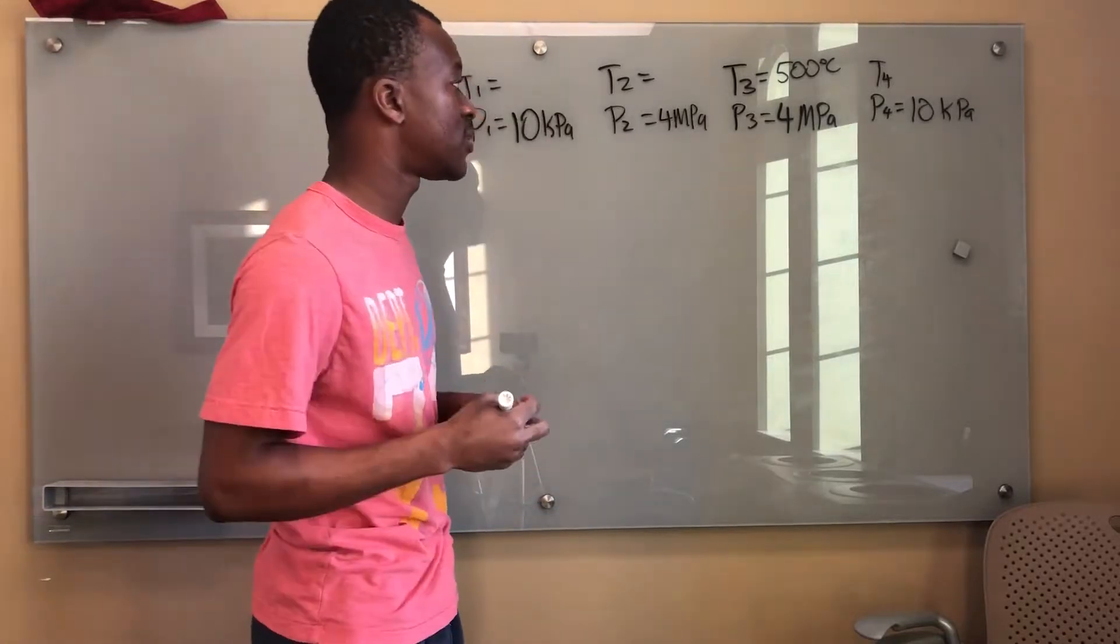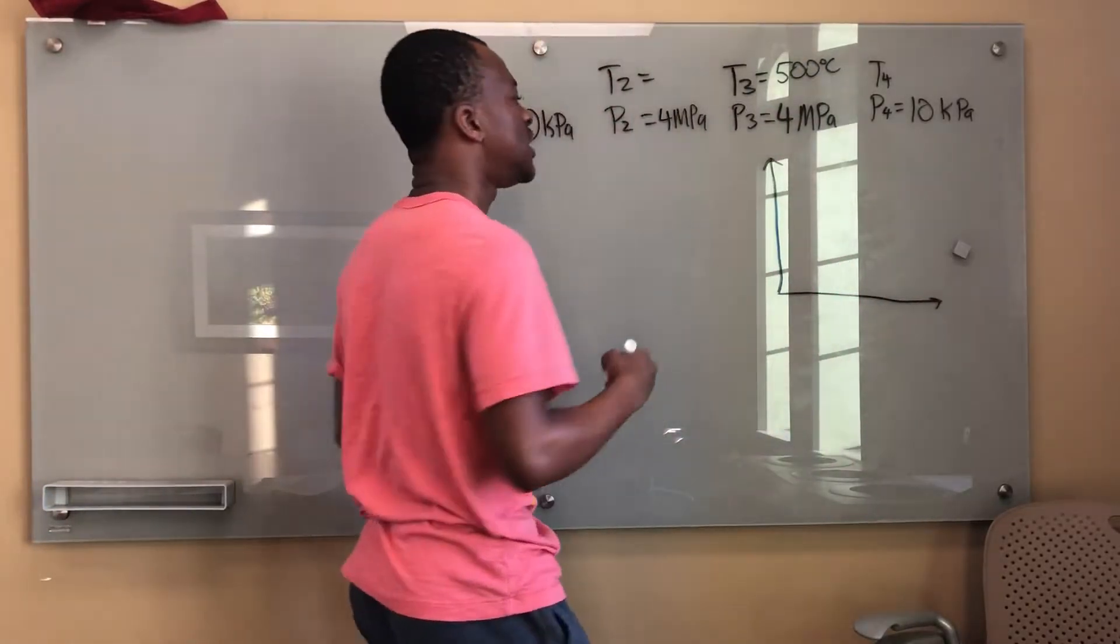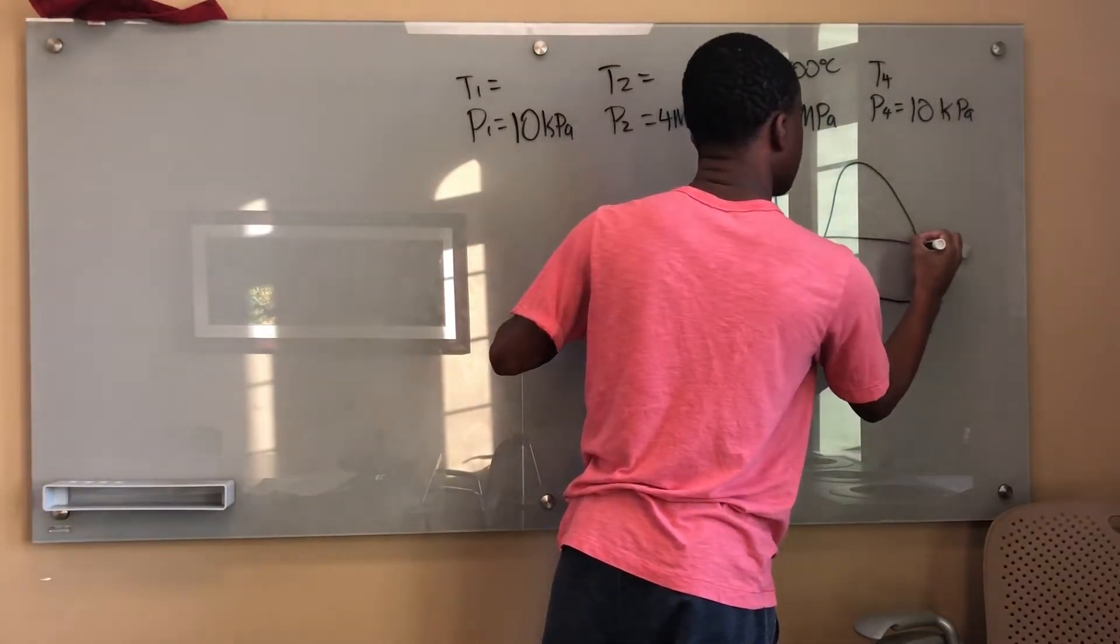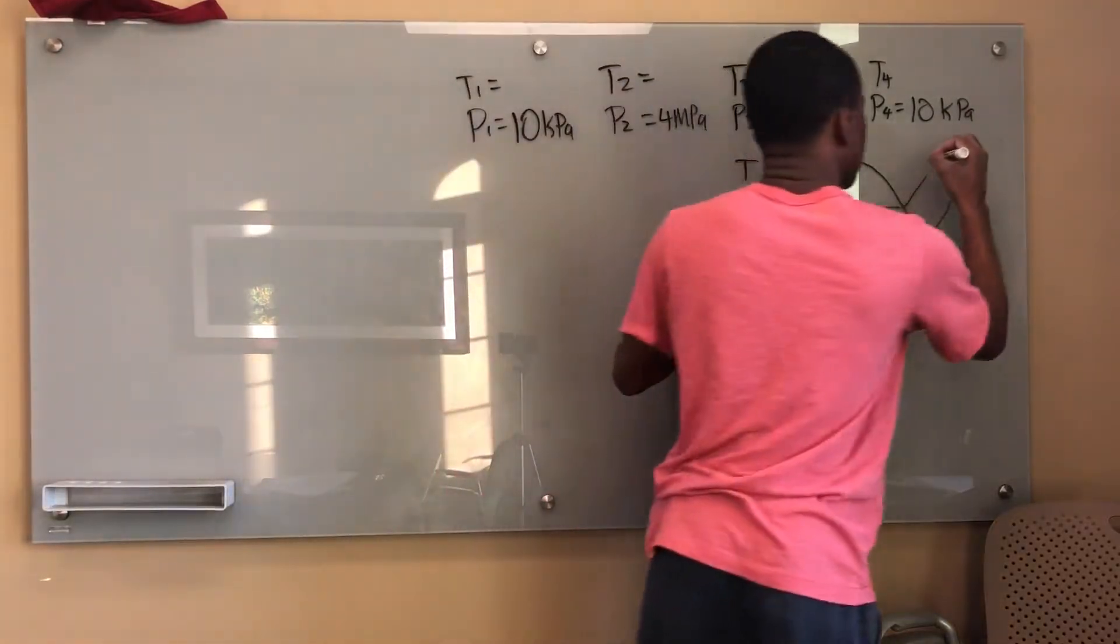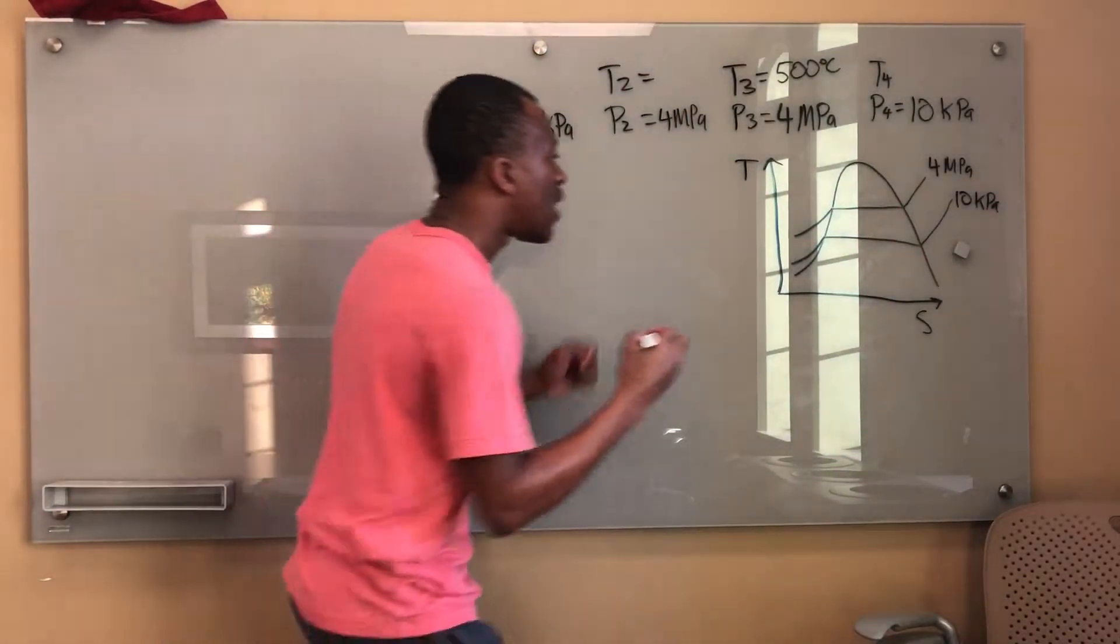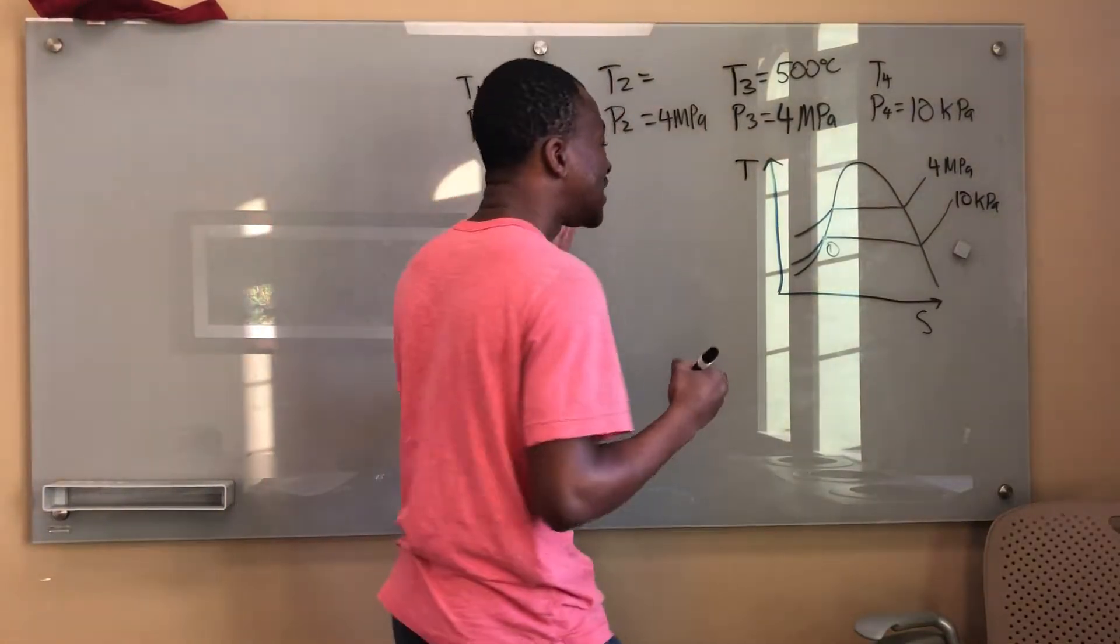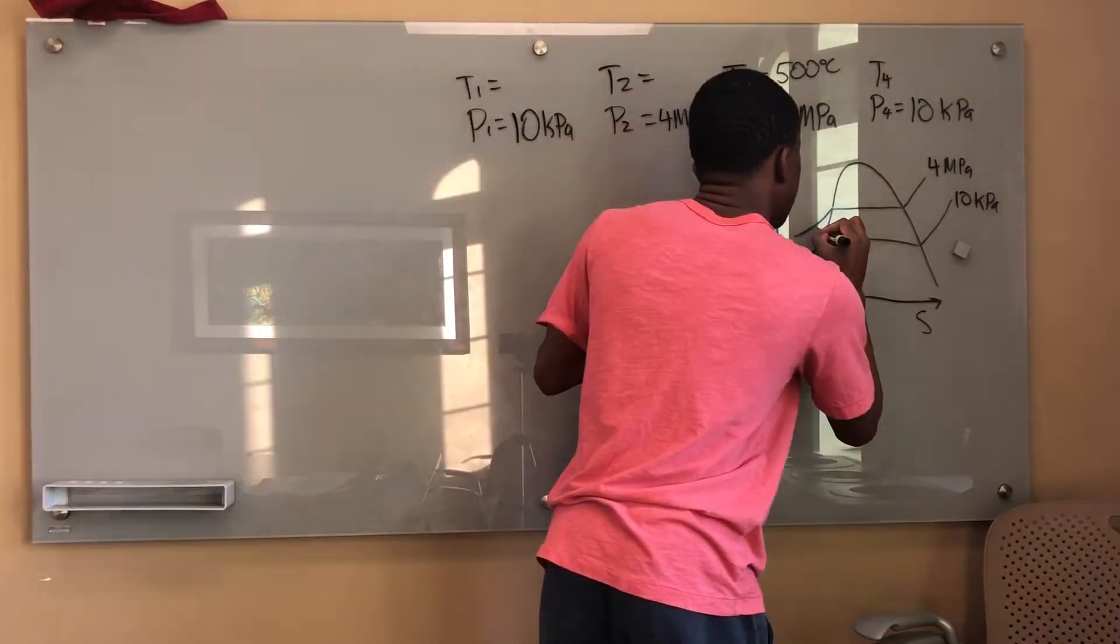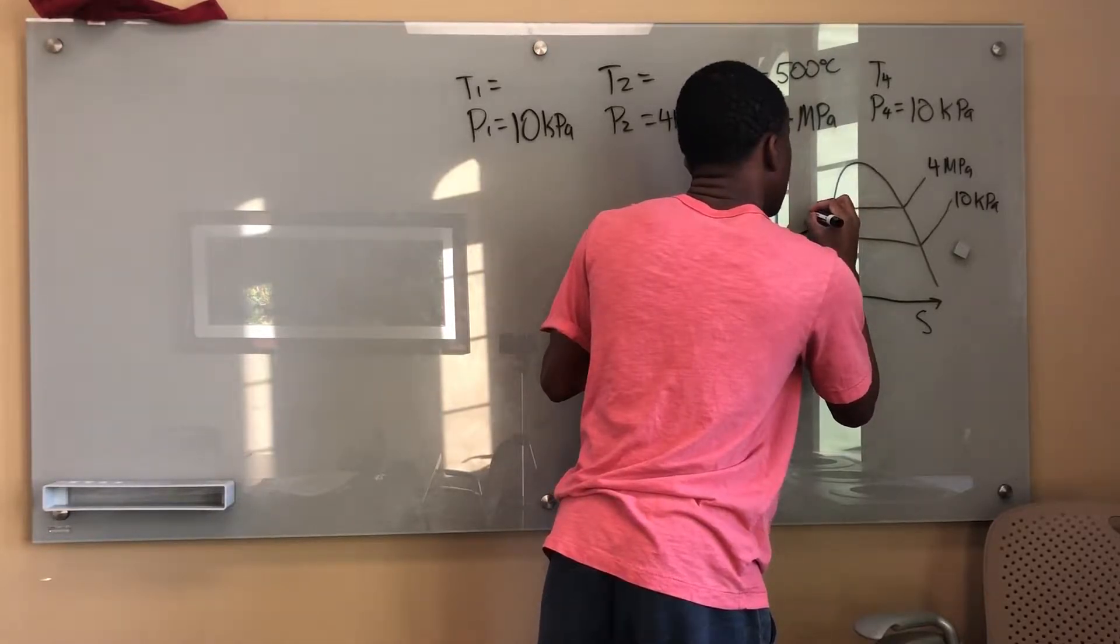Now what would this graph look like? I'm going to draw a T-S diagram. I know that my dome is going to be something like this. I'm operating between two pressures: a low pressure and a high pressure. This is the 4 MPA constant pressure line and this is my 10 kPa constant pressure line. I know my point 1 is right here, that's where it always starts off for the ideal Rankine cycle. We assume it starts off as a saturated liquid. It's an isentropic compression, so isentropic means there's no change in S, and because it's being compressed the temperature is going to go up, so I'm going to have something like this. This point right here is my t2.